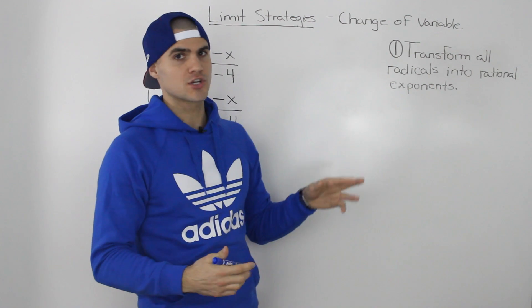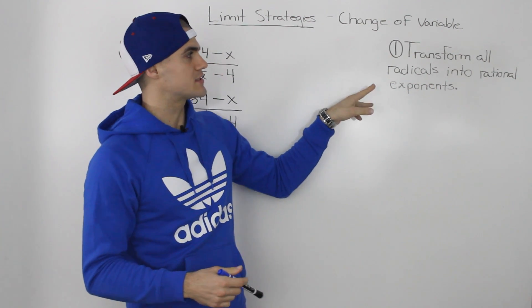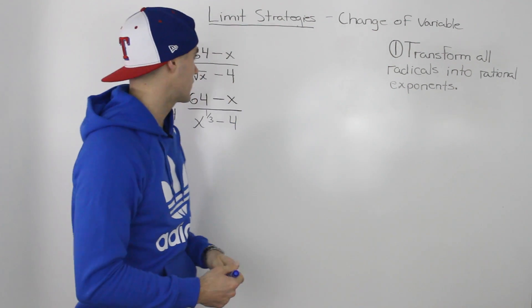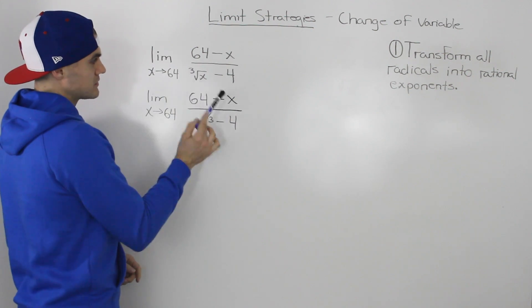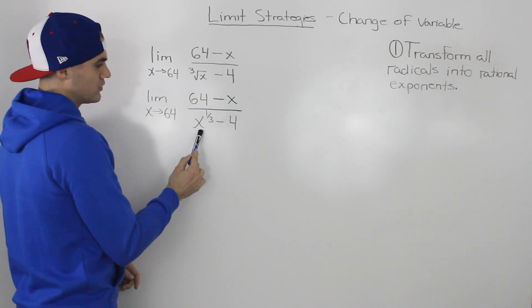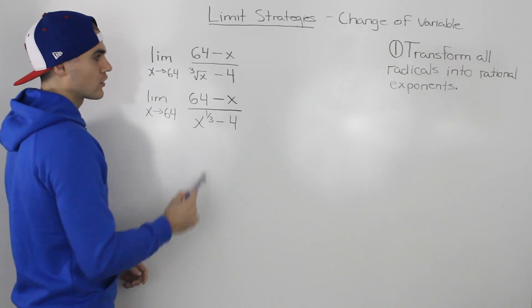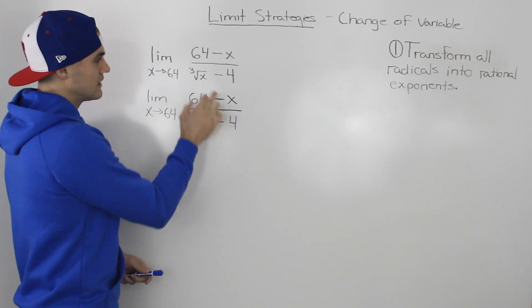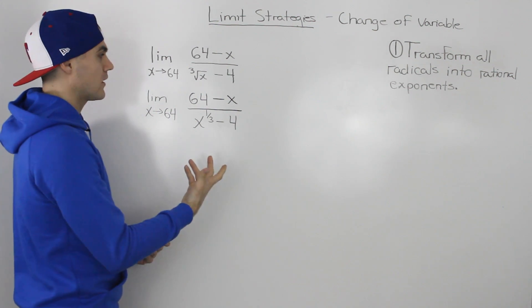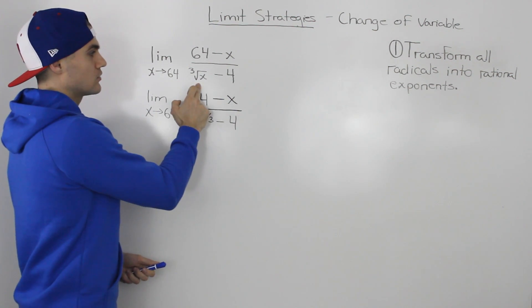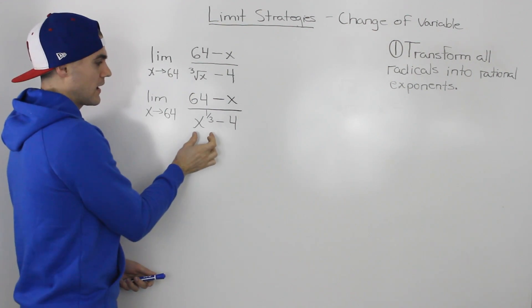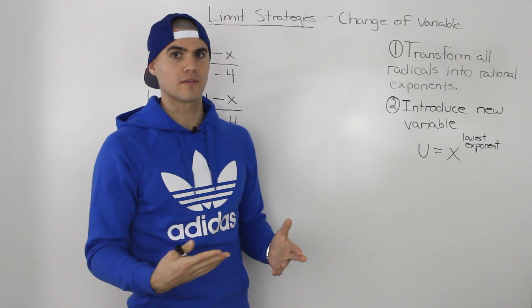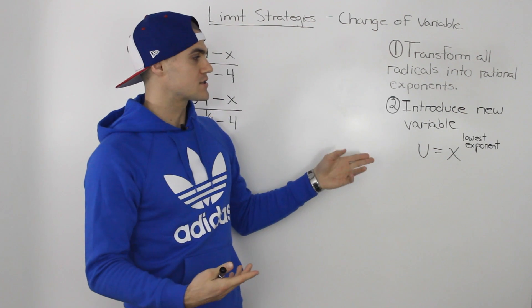Now let's get into the steps for the change of variable strategy. Step one: take all of the radicals in the limit and transform them into rational exponents. In our example, we keep everything the same but rewrite the third root of X as X to the power of 1/3. The question might already give you rational exponents, but if you're given radicals, always convert them first.